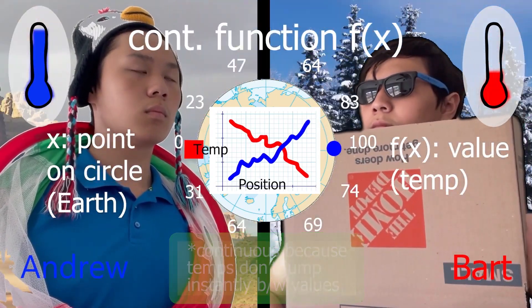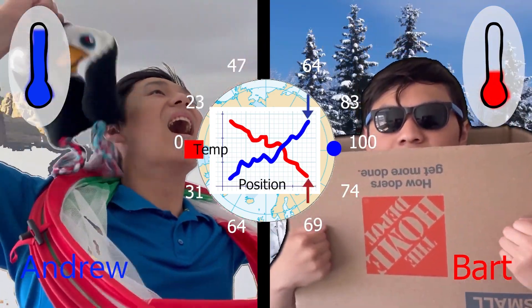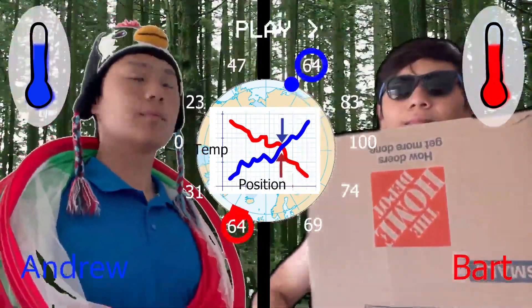Once Andrew stops where Bart began, Andrew is now hotter and Bart colder. This means that their temp graphs must have crossed somewhere, proving the two were once the same temperature.